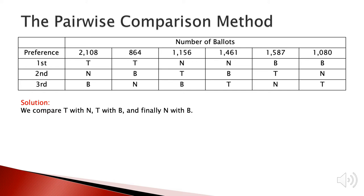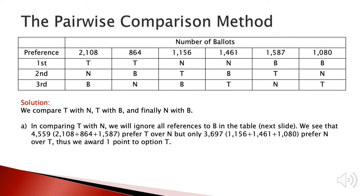First, we compare T and N. We look at the columns where T ranks higher than N, which are the first, second, and fifth columns. Adding up those voters, we get 2,108 + 864 + 1,587, which equals 4,559. Similarly, we look at the columns where N ranks higher than T — columns 3, 4, and 6 — giving 3,697 voters who prefer N to T. Comparing these two numbers, T is more preferred than N, so we give T one point.